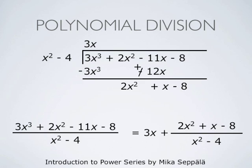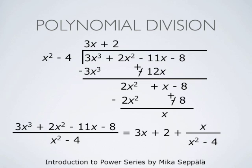We search for a monomial such that when we multiply the leading term of the denominator, x², by that monomial, we get 2x², which is the leading term of the current remainder. That term is simply 2, a constant. When we multiply x² − 4 by 2, we get 2x² − 8. We change the signs and add: 2x² and −2x² cancel, as do −8 and +8, and we are left with x. Therefore (3x³ + 2x² − 11x − 8) / (x² − 4) = 3x + 2 + x / (x² − 4). This is the ordinary long polynomial division.